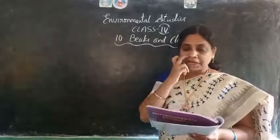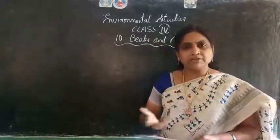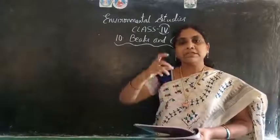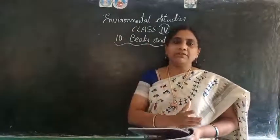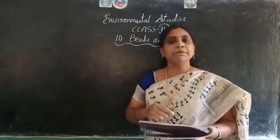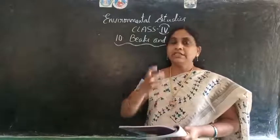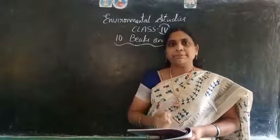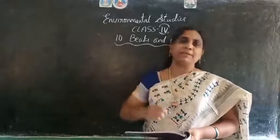Different birds have different kinds of beaks and claws. There are so many different types of birds in our environment, and they have different beaks — one bird will have a different size and another will have a different size. The shape of a bird's beak and claws totally depends upon the food it is eating.